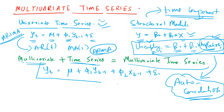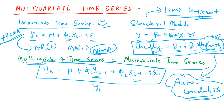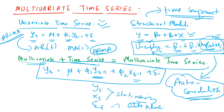Here is the specification. y_t is a linear combination of its own past values — its own lags — plus the past values of another independent variable x_t. Both y_t and x_t are stationary time series, and the error term e_t is white noise.